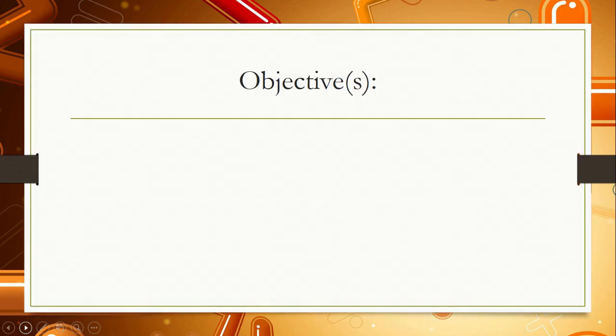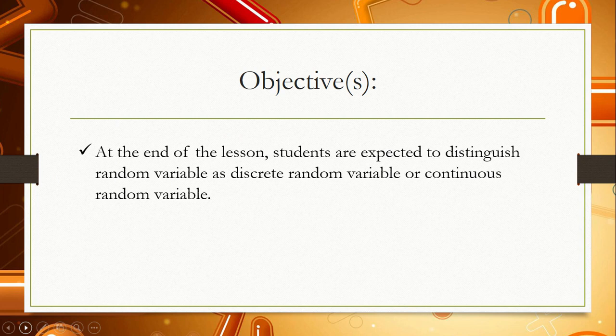First, our objective is that at the end of the lesson, students are expected to distinguish a random variable as a discrete random variable or a continuous random variable.